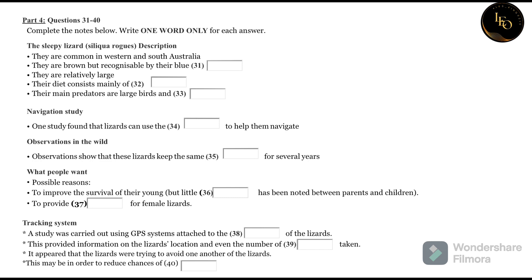One study carried out by Michael Freak at Flinders University investigated the methods of navigation of these lizards. Though they move slowly, they can travel quite long distances. And he found that even if they were taken some distance away from their home territory, they could usually find their way back home as long as they could see the sky. They didn't need any other landmarks on the ground.